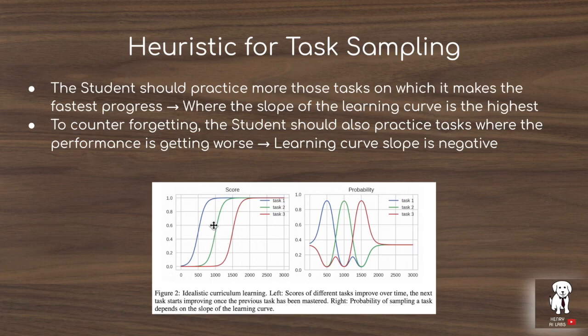The teacher also balances forgetting by selecting tasks with negative learning curves, which gets blended into the selection by taking the absolute value of these negative curves. In this way, this curriculum learning technique resembles AI paradigms like intrinsic motivation and open-ended algorithms that seek to explore and optimize networks in a way that isn't solely focused on a single objective metric.